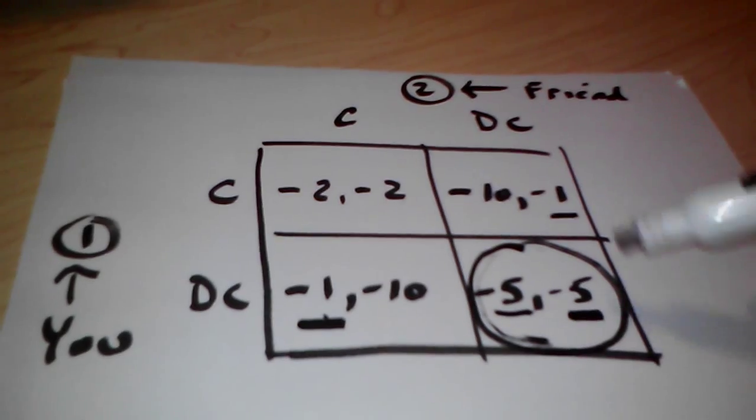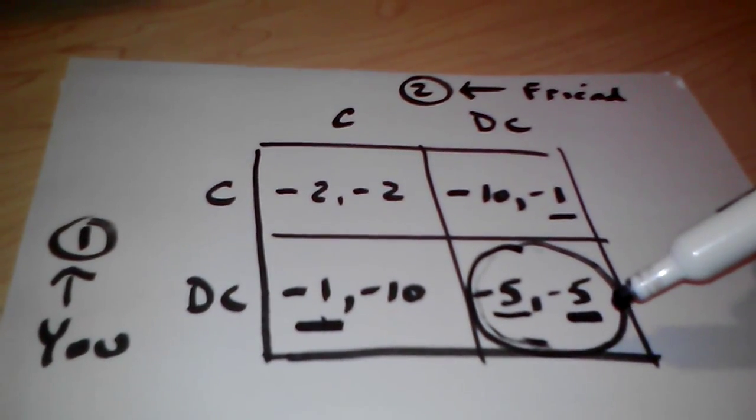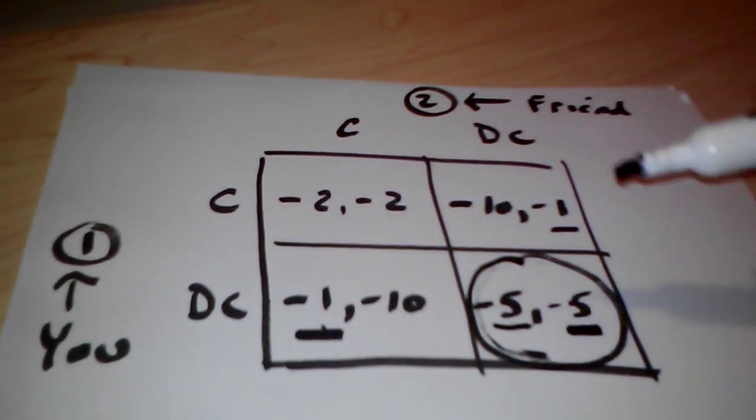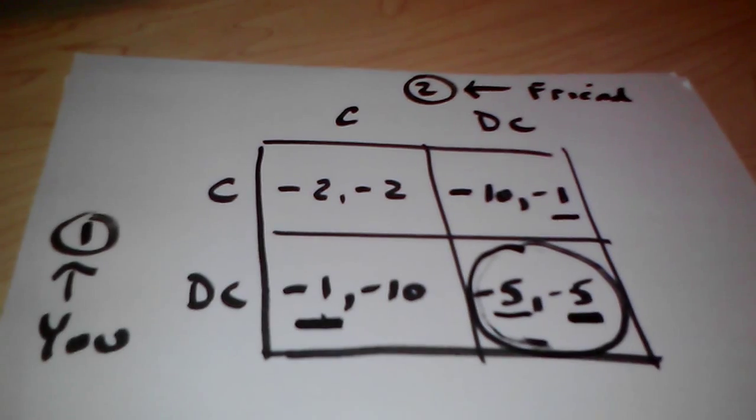The reason this is called a prisoner's dilemma is because you get stuck in this equilibrium of negative five, negative five, and you want to get to negative two, negative two, or somewhere else, and you simply can't get there. So it is a dilemma.